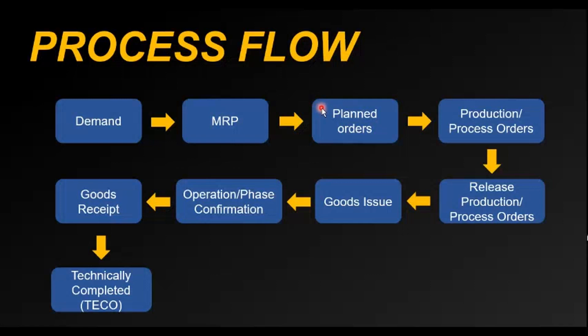In the MRP process it also creates purchase requisitions for the raw materials that are part of the bill of material. It checks the stock statistics for those raw materials and accordingly proposals are created at that level. Once the planned order has been created for the finished product, we convert the planned orders into a production order or process order.